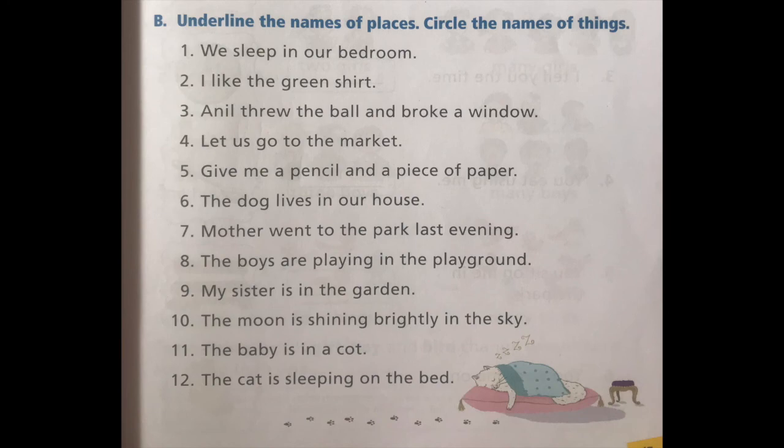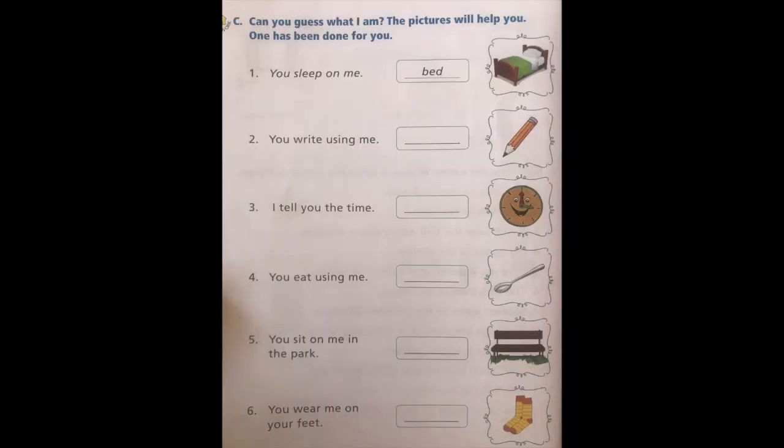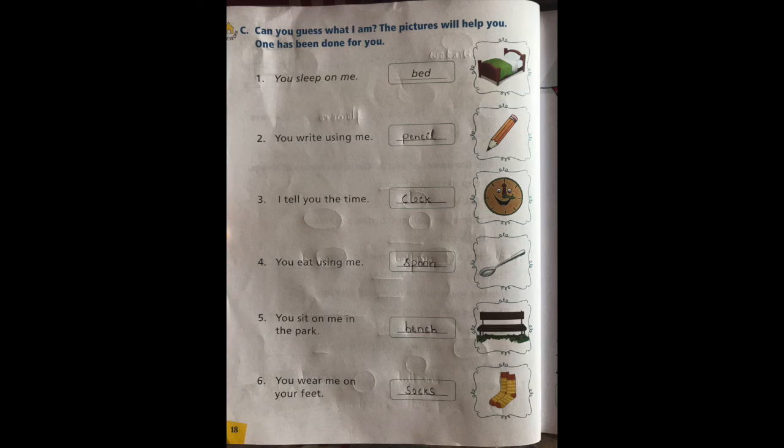Now let's turn to page number 18. Here there is some homework for you. Let's read the question: Can you guess what I am? The pictures will help you. One has been done for you. There are some questions — read them and looking at the picture you can write the name of the thing. I want you to do it yourself and then I will display the answers on the screen for you to cross-check.